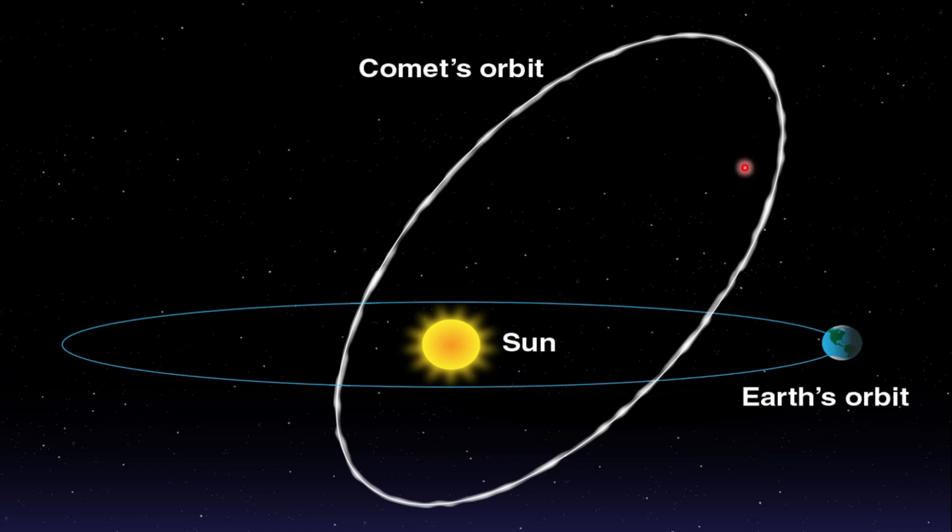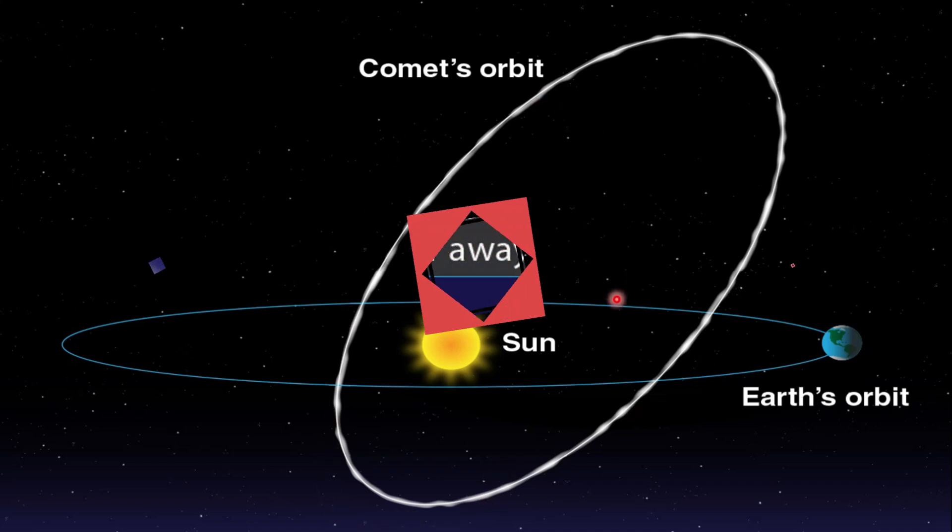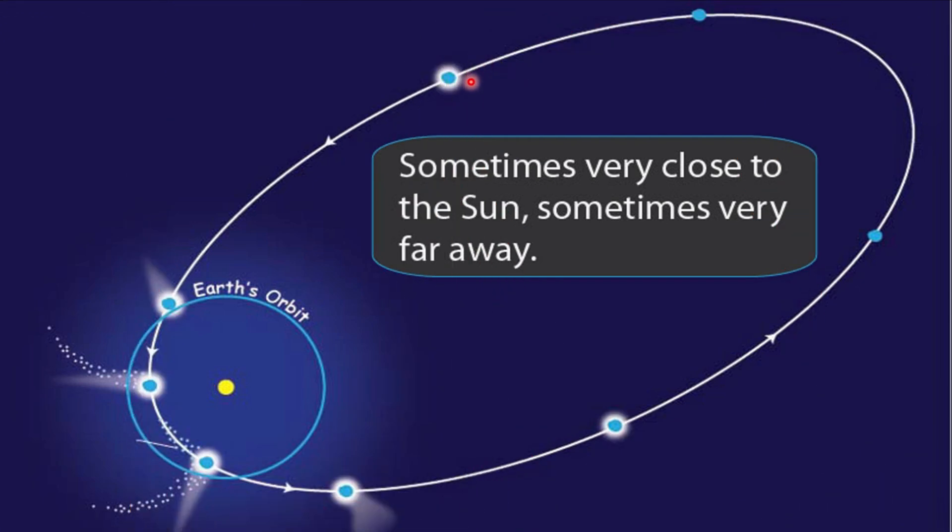Comet go around the Sun in highly elliptical orbit. According to this diagram, this is the comet, and this is the Sun. Due to the comet's elliptical shape, you can see, sometimes the comet very close to the Sun, but sometimes it's very far away.